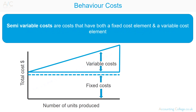Semi-variable costs are costs that have both a fixed cost element and a variable cost element. The best example to explain semi-variable costs is telephone bills — with a landline, you have the fixed line rental charge and a variable call cost charge.